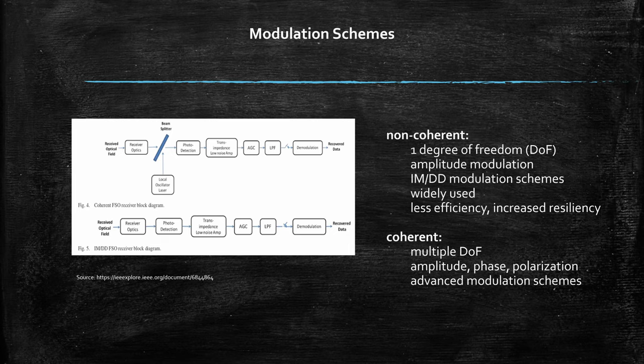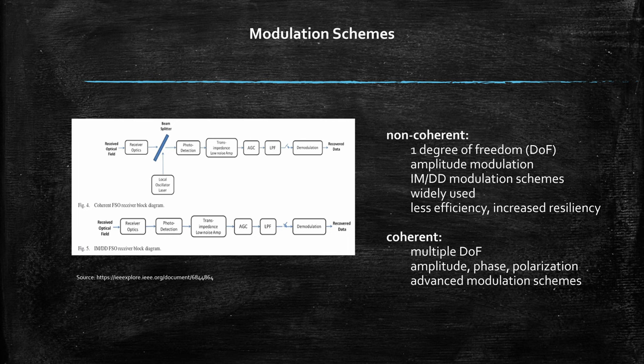The block diagrams illustrate the components of a coherent modulation system on one side and intensity modulation with direct detection on the other. Both include receiver optics, photodetection and demodulation stages. However, the coherent receiver also integrates a local oscillator that has to be synchronized with the transmitted beam. This is necessary for the phase and frequency sensitive detection process.